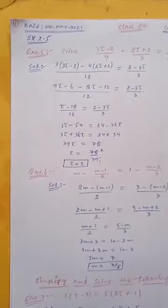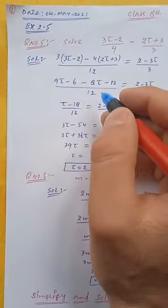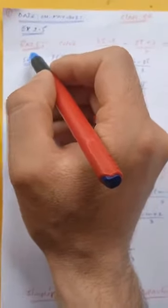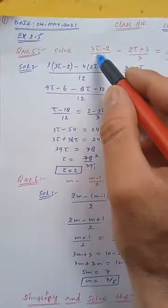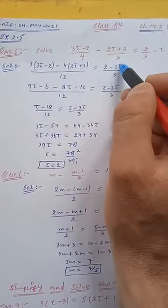Good afternoon everyone, my dear students. As you all know, we are doing chapter number 2, exercise 2.5, question 5. Solve this: (3t - 2)/4 - (2t + 3)/3 = 2/3 - t.